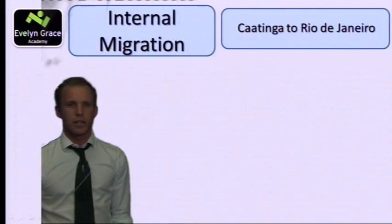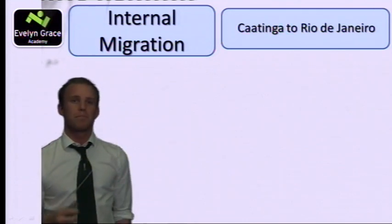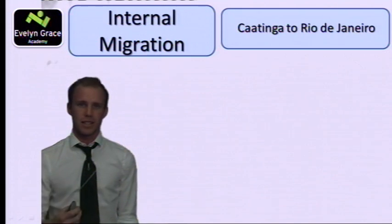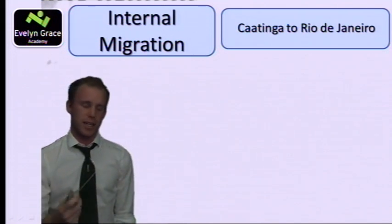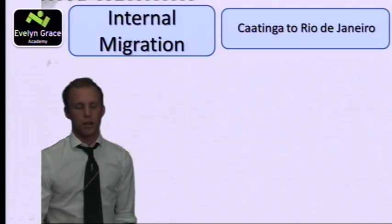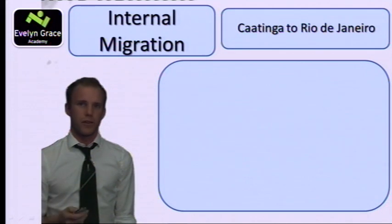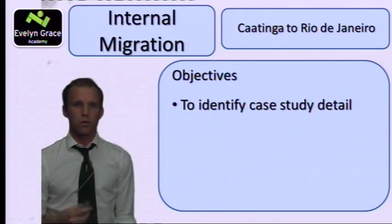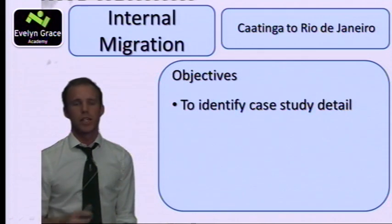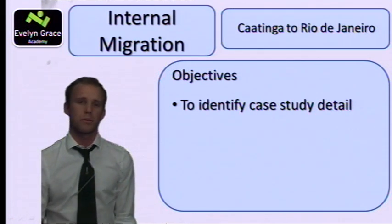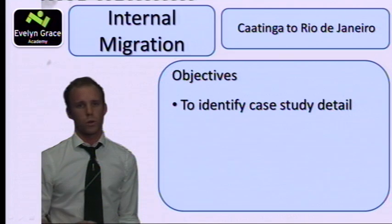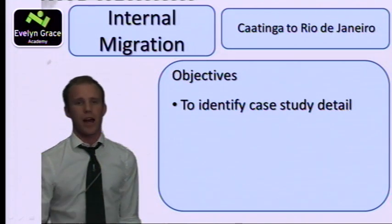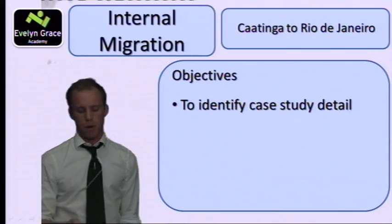This video is on internal migration. Internal means from one area of a country to another, not between countries. In this example we'll look at Caatinga to Rio de Janeiro. This video covers case study detail, and it's really important when writing your case studies to include as many facts and figures as possible to show the examiner you know what you're talking about.